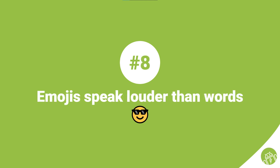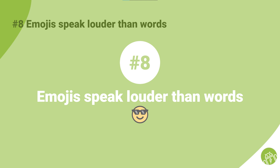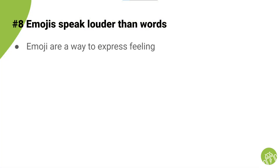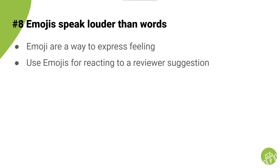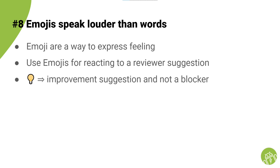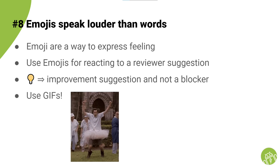Number eight: emojis speak louder than words. Pull request reviews usually happen asynchronously, and emojis are a cool way to express feeling about what you are talking about. You can also use them in reaction to what a reviewer suggested. Your team can agree on defining a special meaning for some emojis — for instance, a light bulb could mean an improvement suggestion that is not a blocker from the reviewer's perspective. Don't be afraid to show your excitement about your colleague's fantastic job with a nice animated GIF.